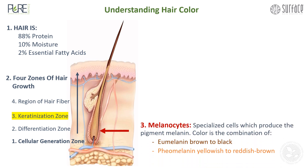Melanocytes are specialized cells which produce the pigment melanin. Color is the combination of eumelanin, which is brown to black, and pheomelanin, which is yellowish to reddish brown.